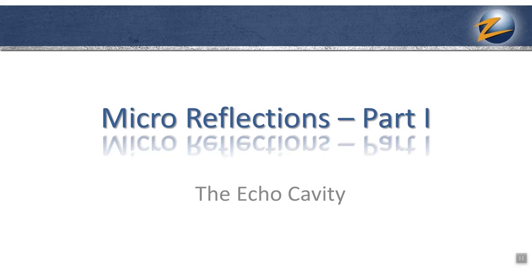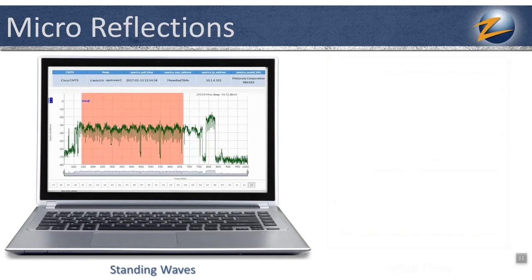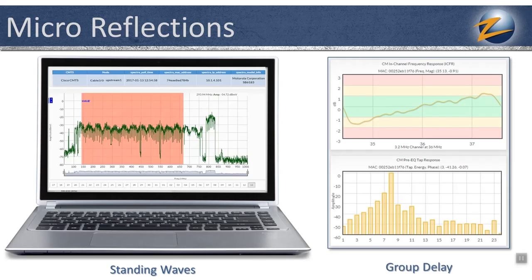Microreflections, also known as reflections or echoes, are a type of impairment in a class of impairments known as linear distortions. Microreflections must be taken seriously and addressed in an HFC plant. They can cause standing waves and group delay, meaning the cable modem will be unable to attain or maintain the levels requested by the CMTS for a specific modulation profile on a particular upstream, and the modem will only be able to connect, if at all, on a reduced modulation profile.